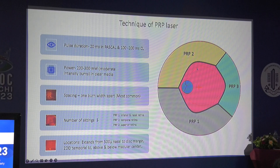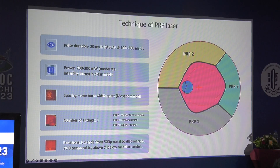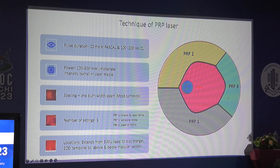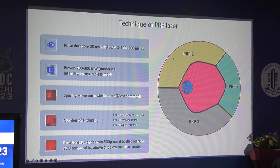We do pan-retinal photocoagulation in three settings. First, you cover the inferior retina and can also cover the nasal retina along with it. The logic is that if inadvertently you hit a neovascular zone causing bleeding, it will gravitate down and remain in the lower quadrant only. For the second or third settings it won't fill up the full retina, so you can still follow PRP2 and PRP3 later on. That is the rationale for starting PRP inferiorly.